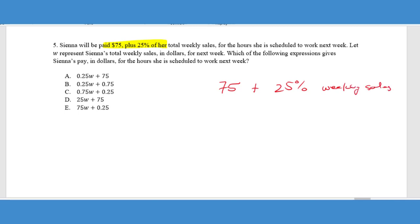So that kind of gives me a verbal explanation of what's going on for the hour she is scheduled to work next week. Let W represent the weekly sales. So I know W is going to represent the weekly sales. And here's the thing. We should know from our pre-algebra that we can't represent 25% with the percentage sign in there. We need to convert that to 0.25 for mathematical purposes. It says, which of the following expression gives Sienna's pay in dollars for the hour she is scheduled to work next week.